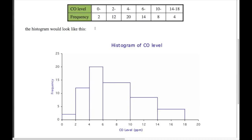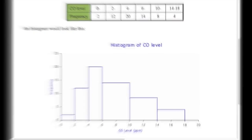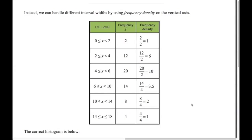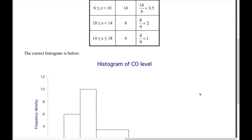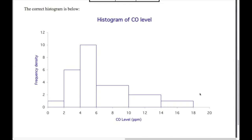Using the formula frequency divided by the class width, we calculate the frequency densities — for example, 2 divided by 2 for the first one, 12 divided by 2, etc. Now drawing the same histogram but this time with frequency density, you can see that the last three bars are now in the right proportion compared with the first three bars.